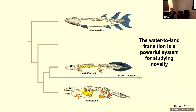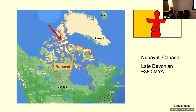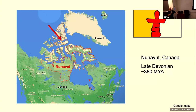In 1998, a series of expeditions to northern Canada were launched, led by Ted Daeschler at the Philadelphia Academy of Natural Sciences and Neil Shubin at the University of Chicago. They were going into what was then a brand-new political entity — Nunavut, the largest indigenous sovereign territory in the world. The Canadian government gave control of Nunavut to the community members and the people of Nunavut in the late 1990s, so it was a really interesting time to be going up there.